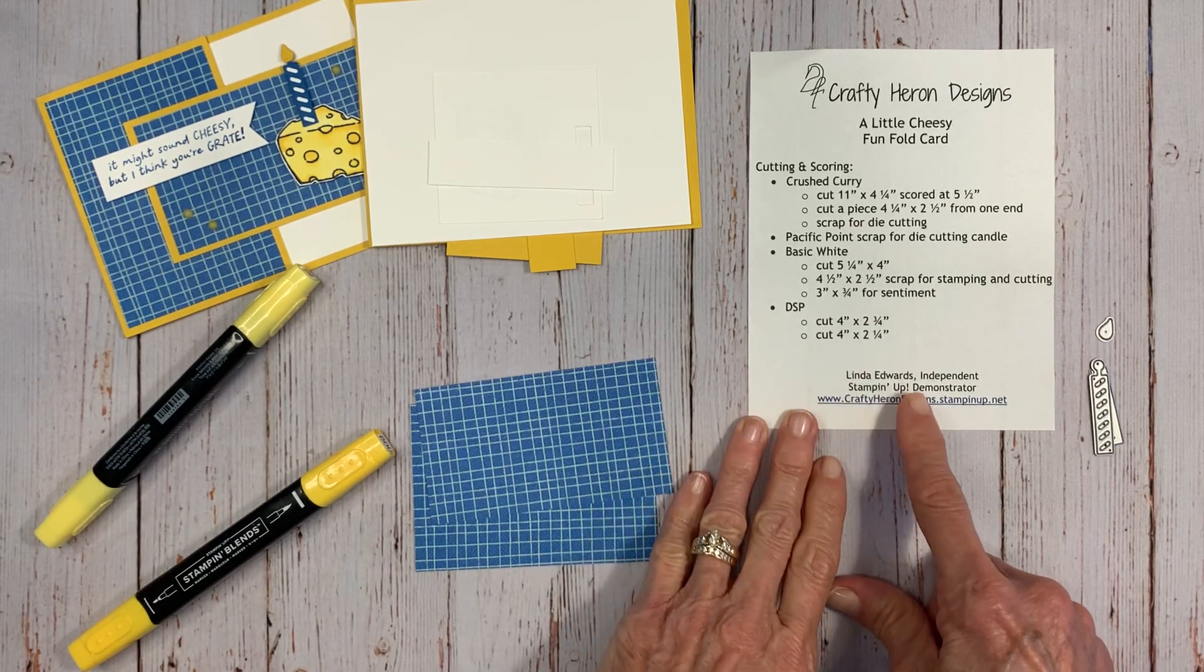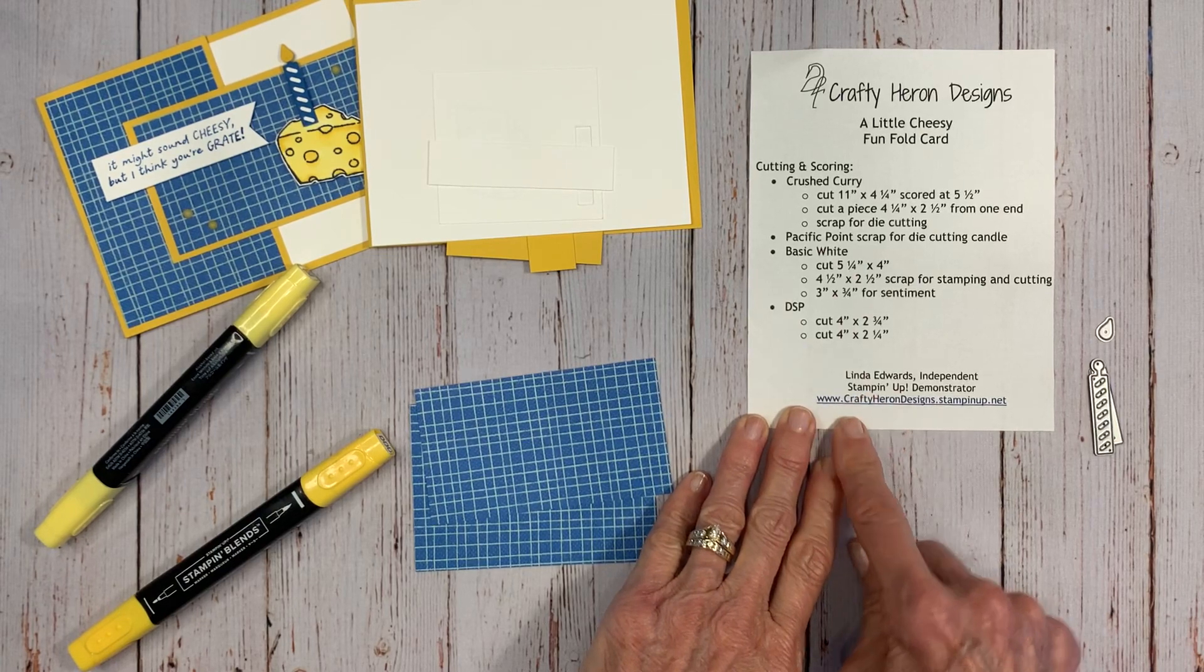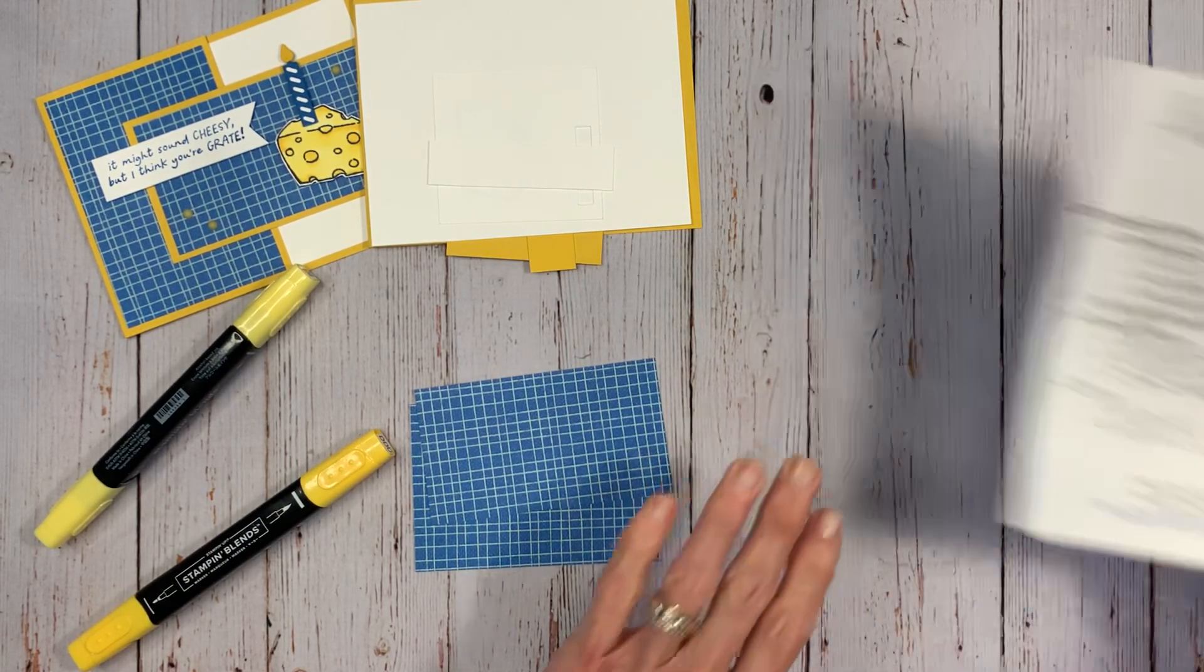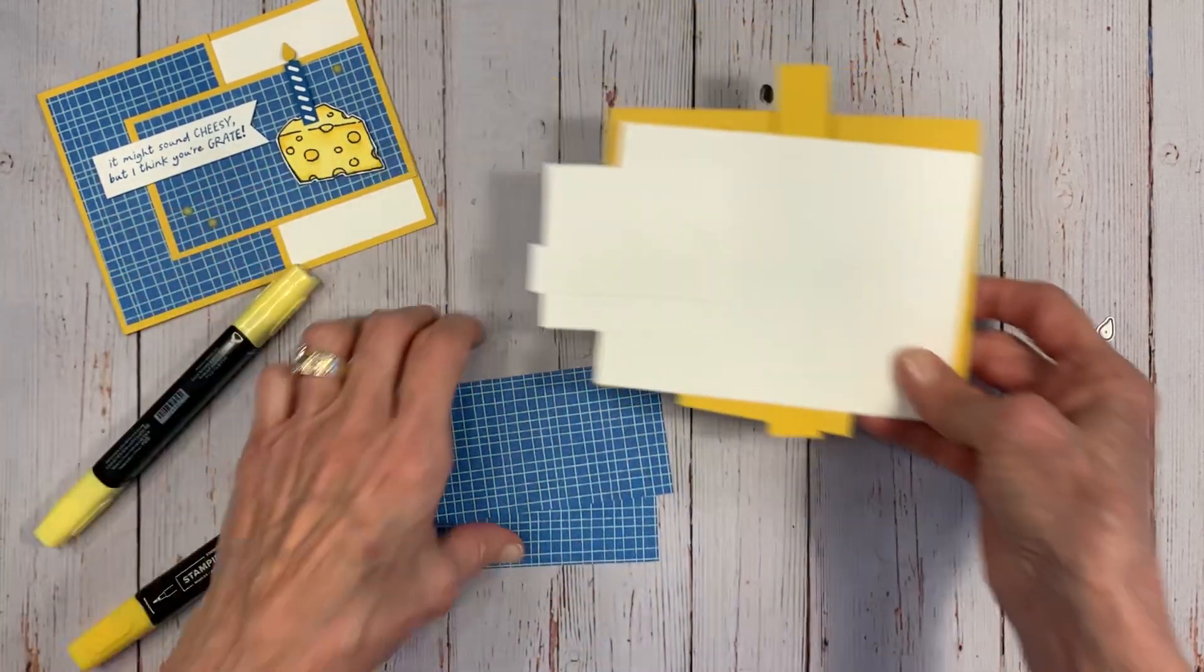And then we're going to use the Stampin' Blends. These are Daffodil Delight, Dark and Light Daffodil Delight. And we're going to use some ink. We're going to use Pacific Point in a little Stampin' Spot and Memento. So that's what you need to get started. I will also have all this information in the description of the video.